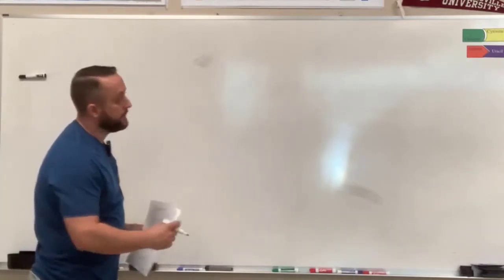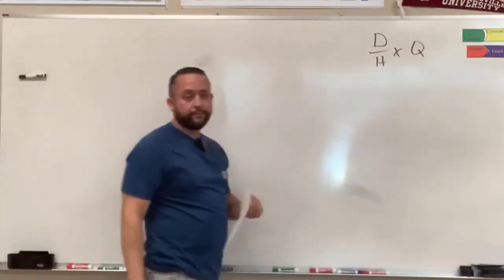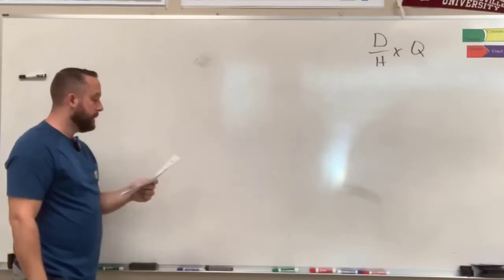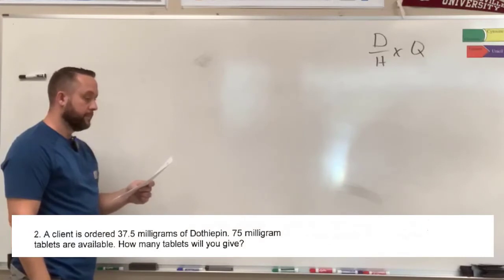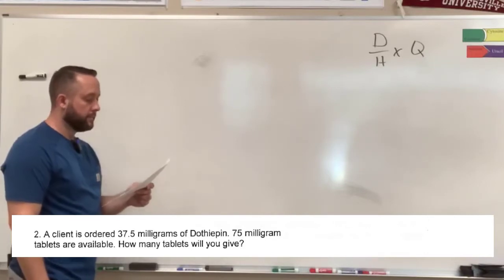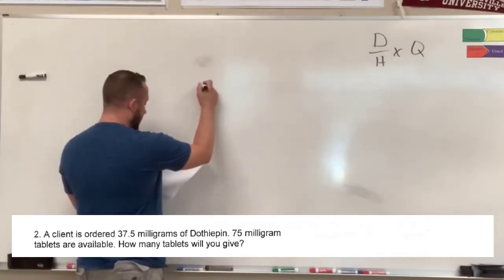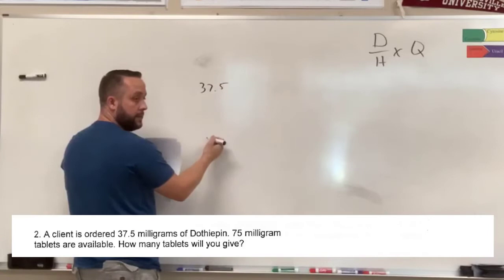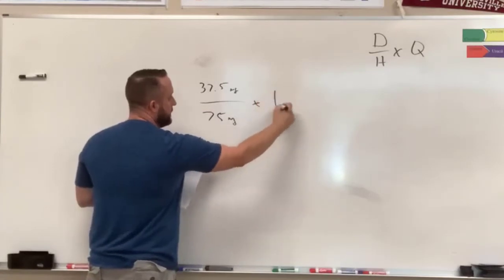Let's look at the second one. Melissa, read that out for me. So I would recommend writing: I desire 37.5 milligrams, but I only have 75 milligrams times one tablet.